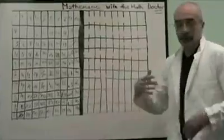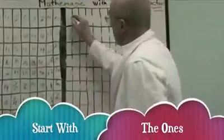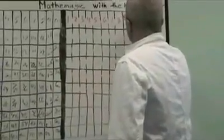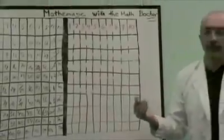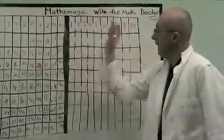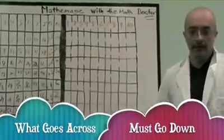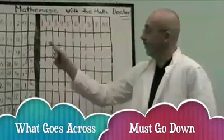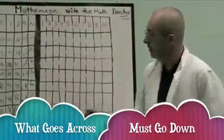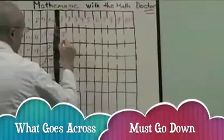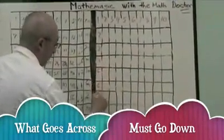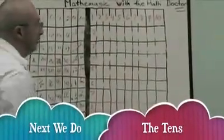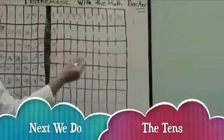The way we do this quickly is to start with our ones. We're going to rewrite the laws of physics here. In the math grid, what goes across must go down. Physics always says what goes up must go down, but we'll rewrite those laws and say what goes across must go down. Now we're going to do the tens. So we started with the ones, and we're going to do the tens now.